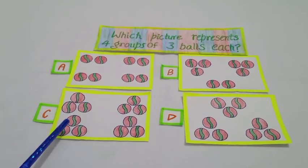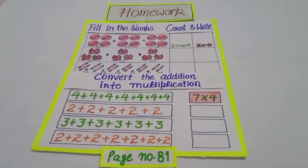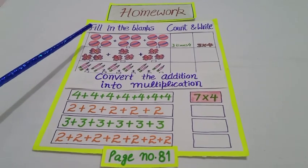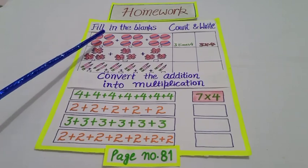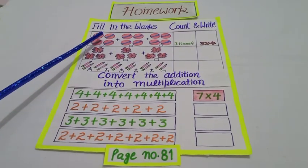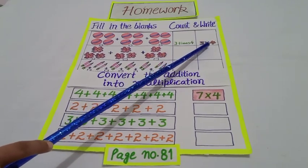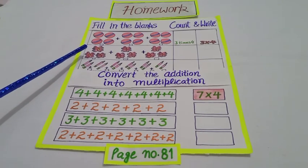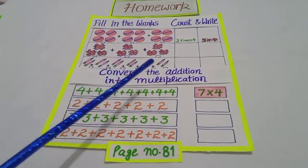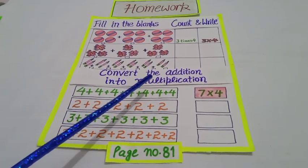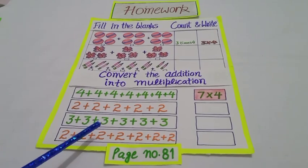Now it's time for your homework. Open page number 81 from your math book. You know about groups. In the first sum, we have to write about the groups and the number in the groups. Here we have 3 groups and 4 balls in each group, so we write 3 times 4 and 3 multiply 4. The other portions are done in the same way. Next, we have to convert the addition into multiplication — we have been given 4 seven times, meaning 7 multiply 4. The other questions are done in the same way.